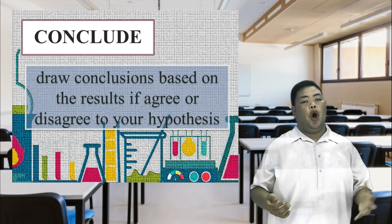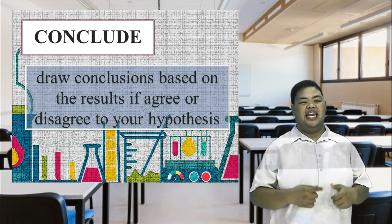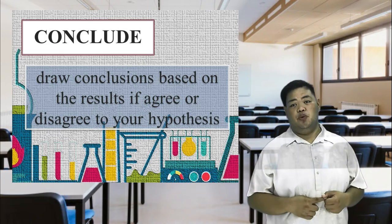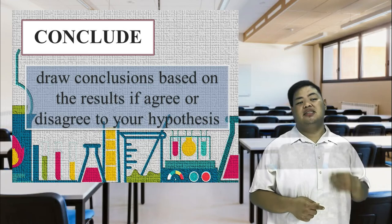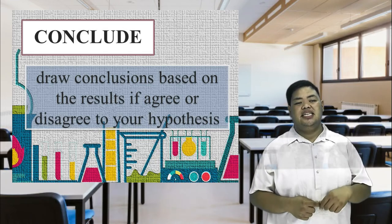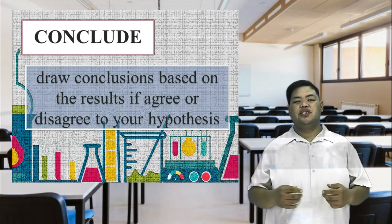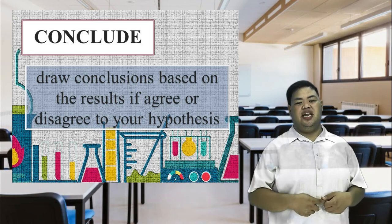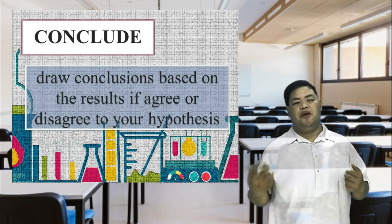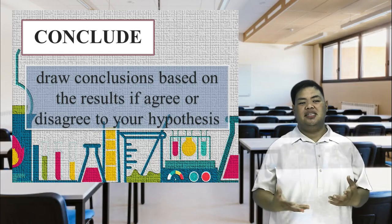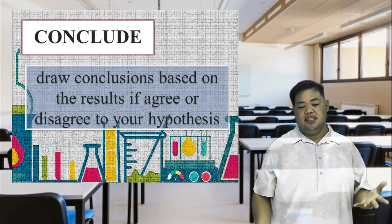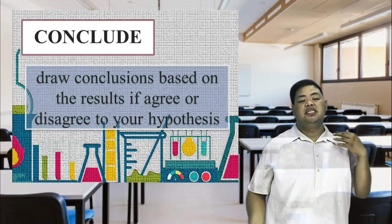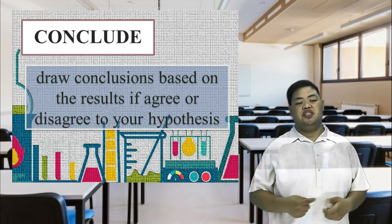Conclude — draw conclusions based on the result, whether they agree or disagree with your hypothesis. A conclusion is based on the interpretation of data. The data may or may not support the hypothesis. If the data do not support the hypothesis, scientists must try the experiment again or plan a new one. If the results still do not support the hypothesis, scientists may form another hypothesis. Failure to come up with supporting data is not a waste of time, as new information and procedures can be gained in the process. If the data support the hypothesis, scientists repeat the experiment, and if a number of similar results are obtained, a scientist publishes a paper and shares the information with other scientists.